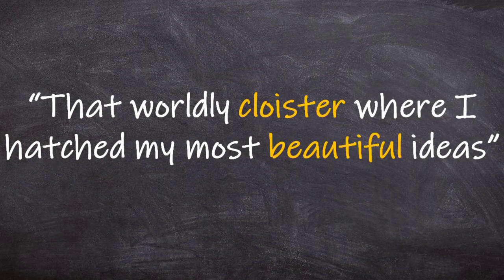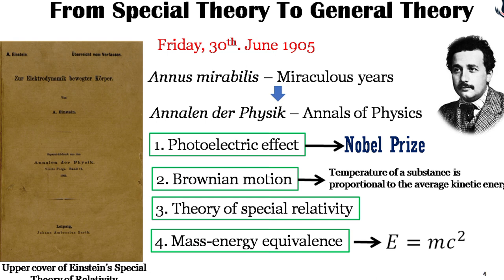For Albert Einstein, working in a crowded, cloistered place was totally different from most people. He stated that the Swiss patent office in Bern was the 'worldly cloister where I hatched my most beautiful ideas.' It was there, working among many people, that he developed what we call the special theory of relativity.